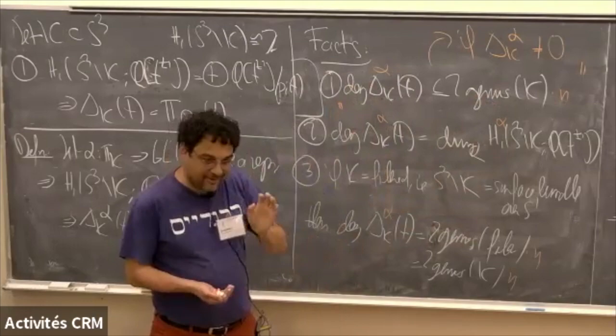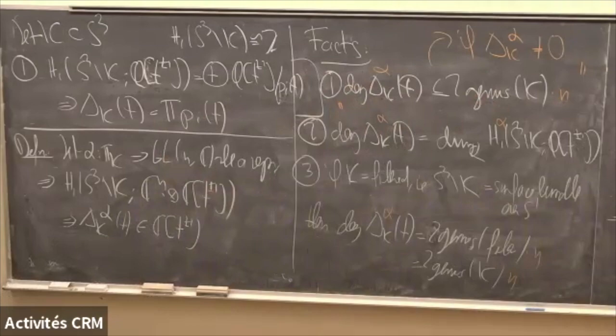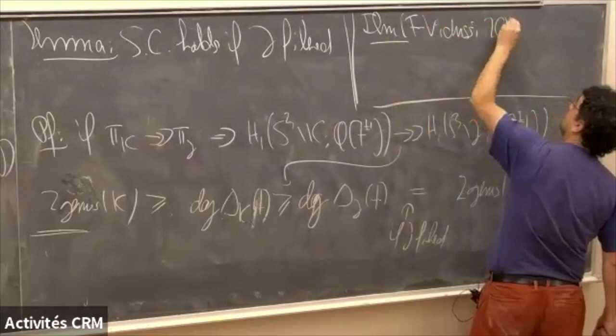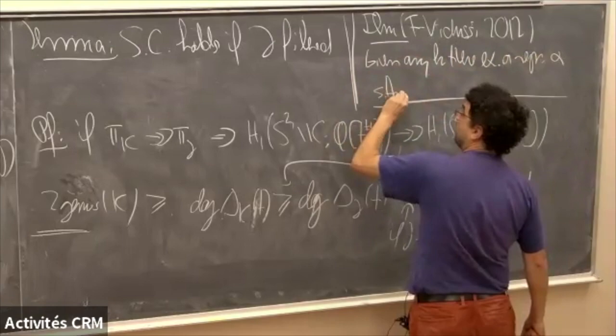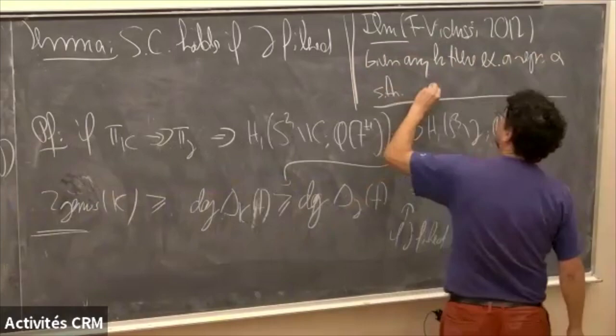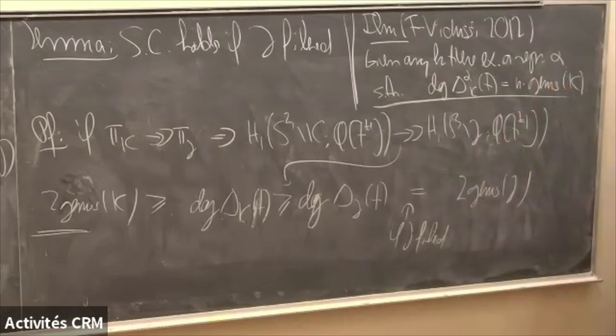There is the following theorem, proved with Stefano Vidussi around 2012: given any knot K, there exists a representation α such that equality holds — the degree of the twisted Alexander polynomial equals n times the genus of K, modulo the error term.